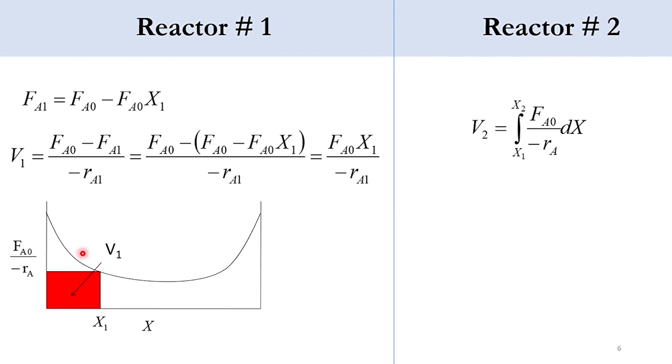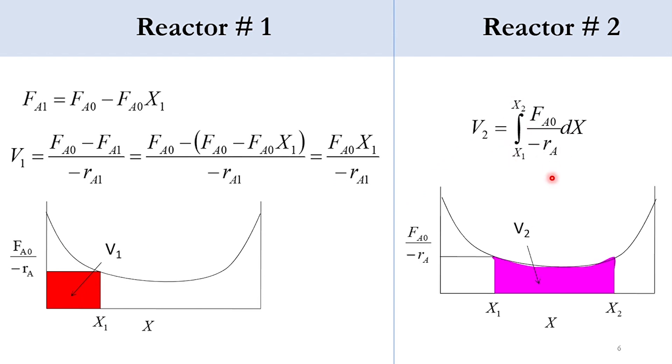For the second reactor, which is a PFR: V2 = integral from X1 to X2 of [FA0 / (-rA)] dx, represented by the shaded region under the curve between X1 and X2.